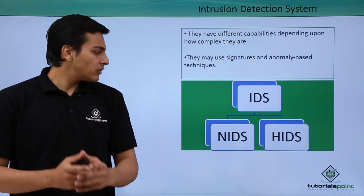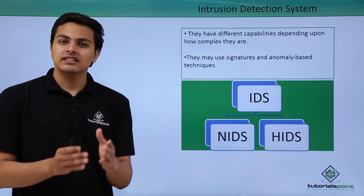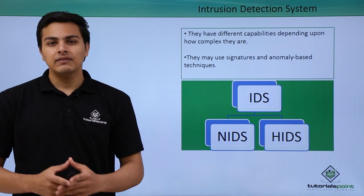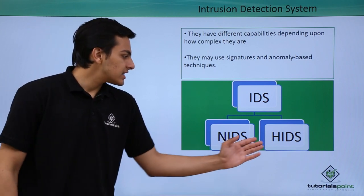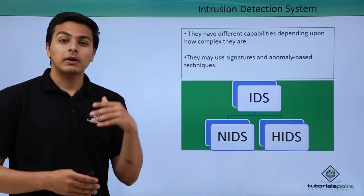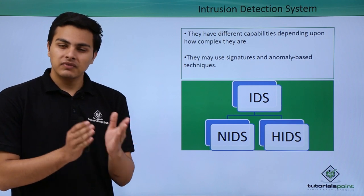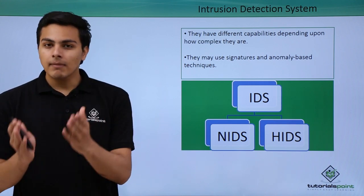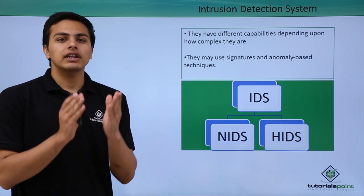Some examples of IDS types are NIDS — Network Intrusion Detection Systems — which are deployed on a network to scan for intruder or hacker activity across the network. HIDS stands for Host Intrusion Detection Systems, which are deployed on a particular host to scan for intruder activity on that host. Some intrusion detection systems are also deployed on web applications to detect hacker activity on those applications.